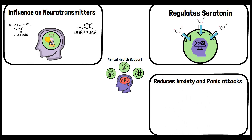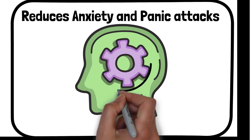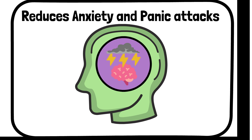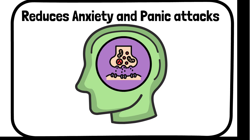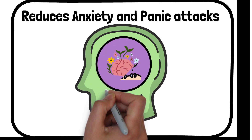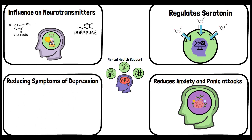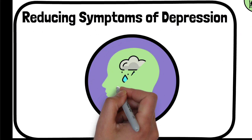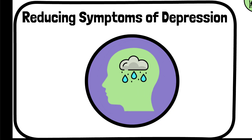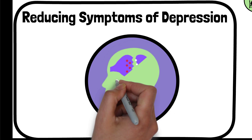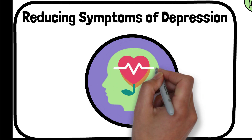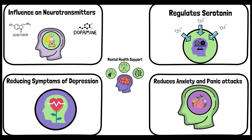Anxiety and panic disorders are often linked with disrupted neurotransmitter signaling. Inositol helps in modulating the activity of neurotransmitters that are out of balance in these disorders. Studies have shown that supplementing with inositol reduces the frequency and severity of panic attacks and the symptoms of anxiety disorders. Depression is complex and involves multiple pathways, including neurotransmitter imbalances, and inositol modulates these neurotransmitters to alleviate depressive symptoms, making it a promising adjunctive treatment.